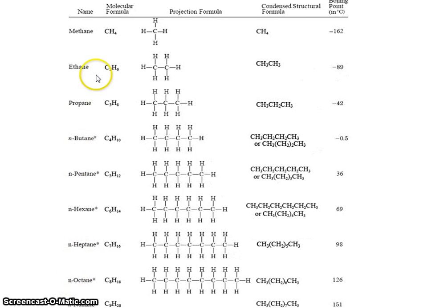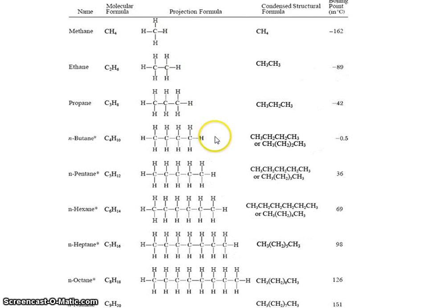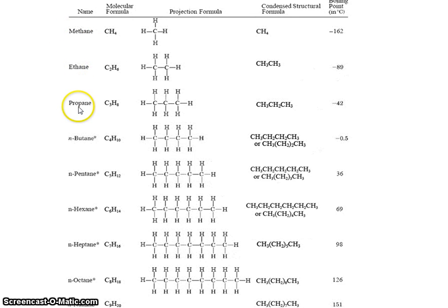Notice that methane has one carbon, ethane has two, propane has three, butane has four, pentane has five, hexane has six, and so on. The prefix — meth, eth, prop — can clue you in to how many carbons the molecule has.